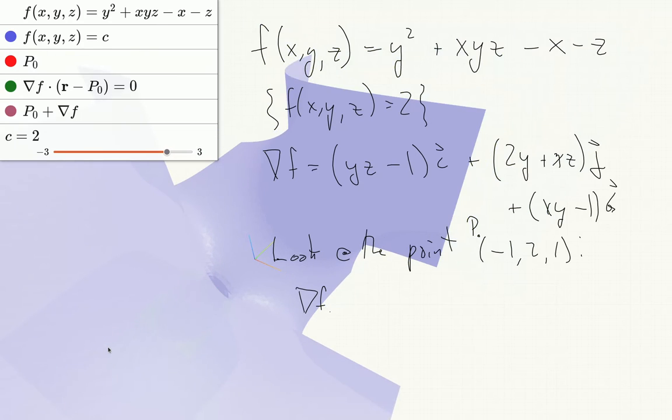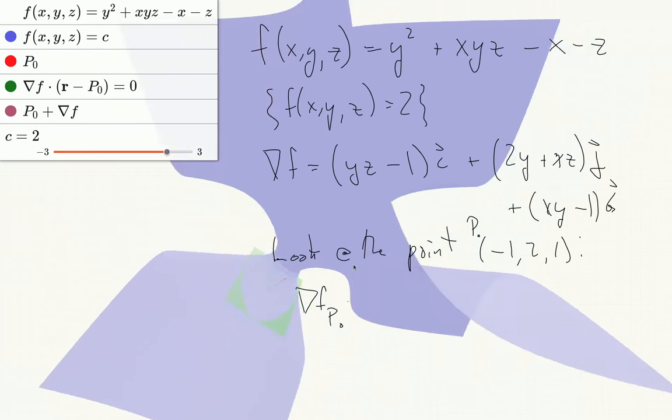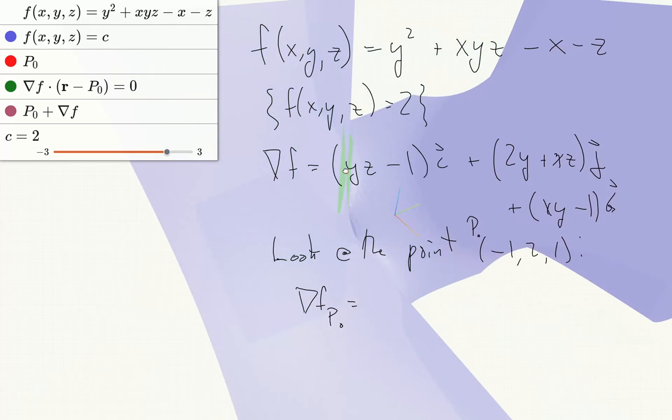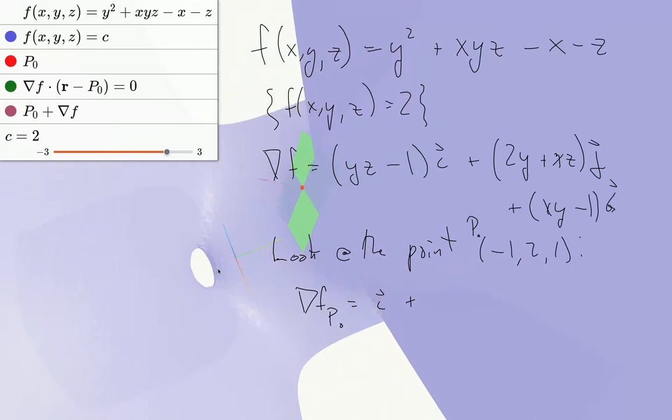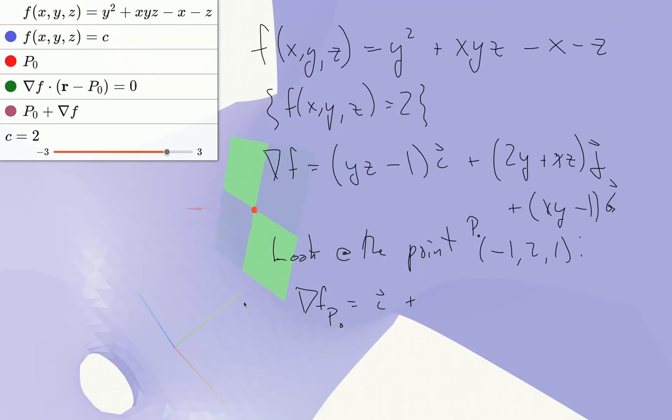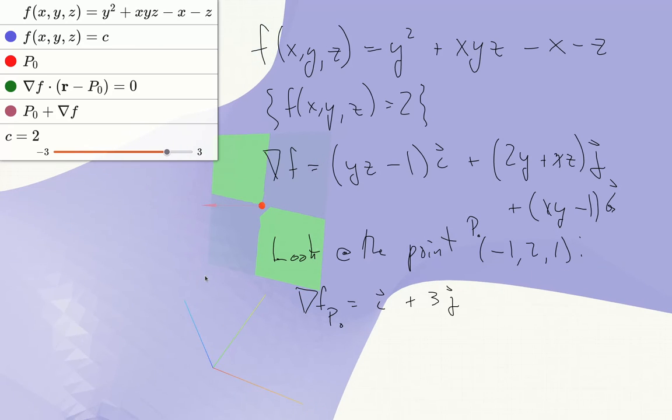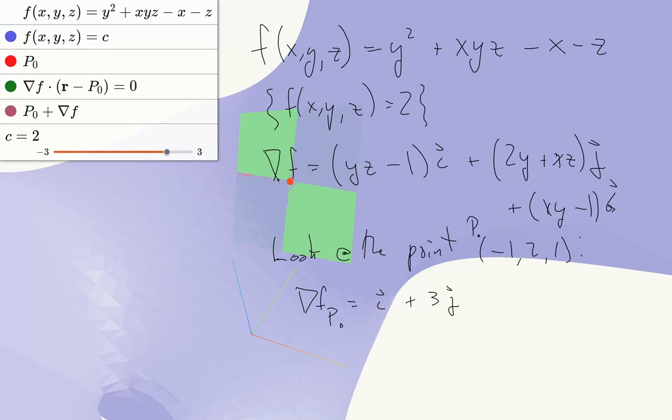So then del f at this point will be, y times z that's 2, so this will be i plus 3j and then negative 3k.